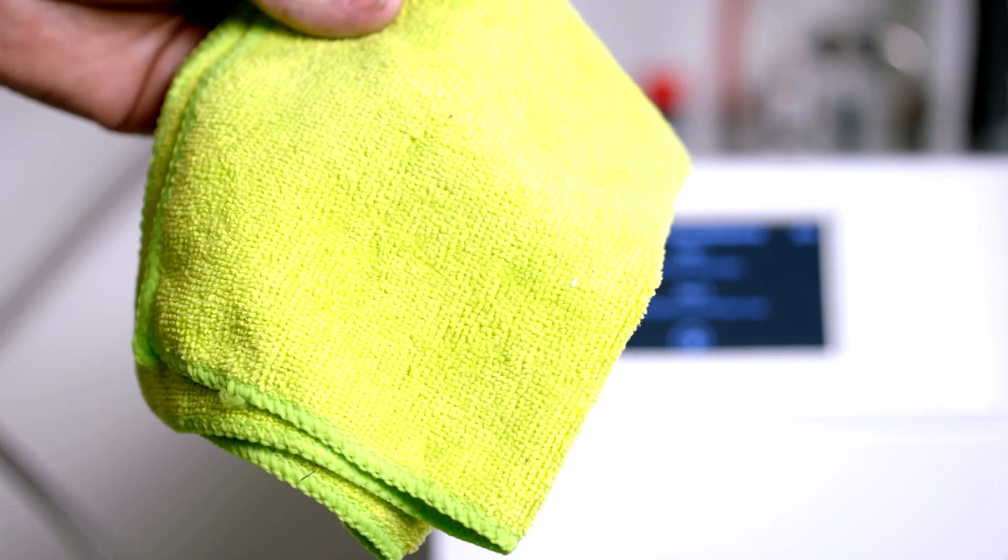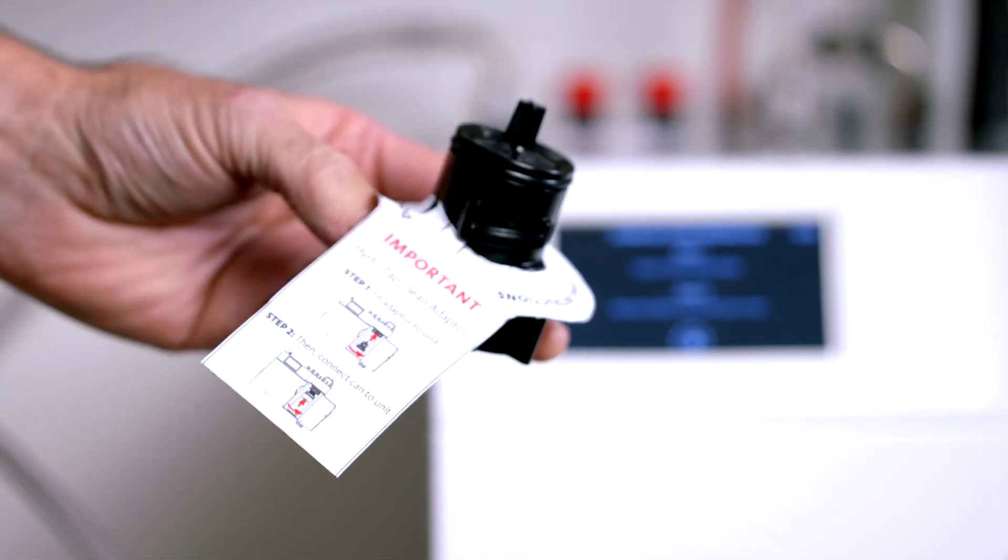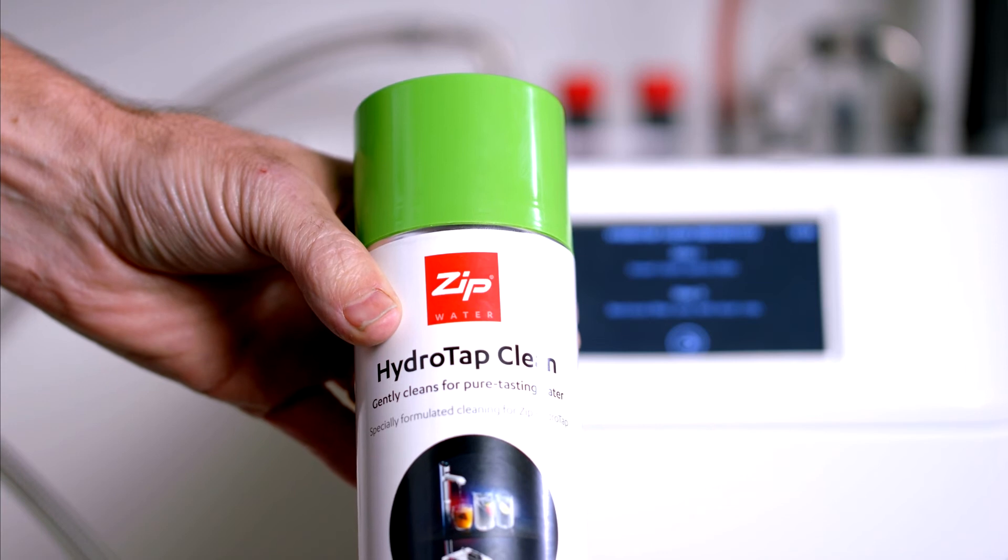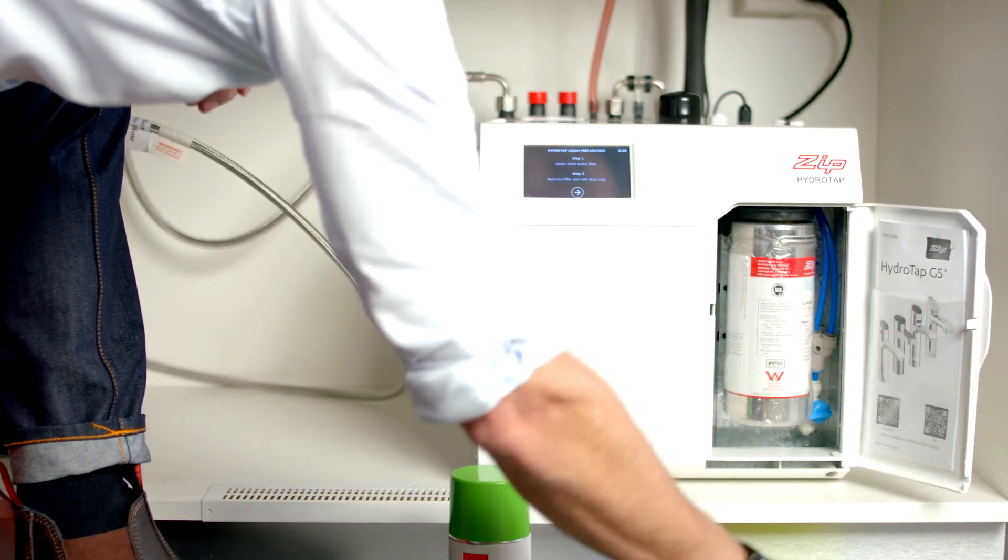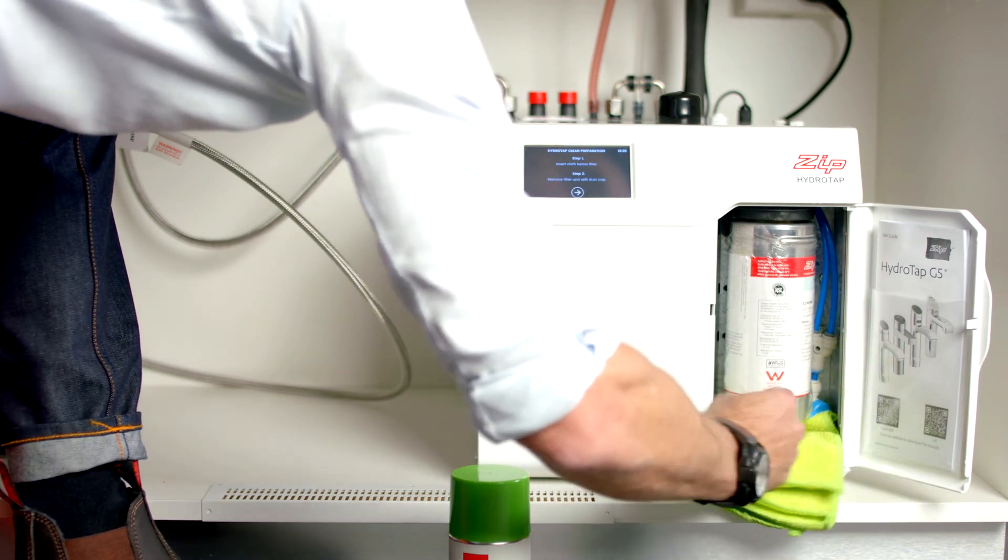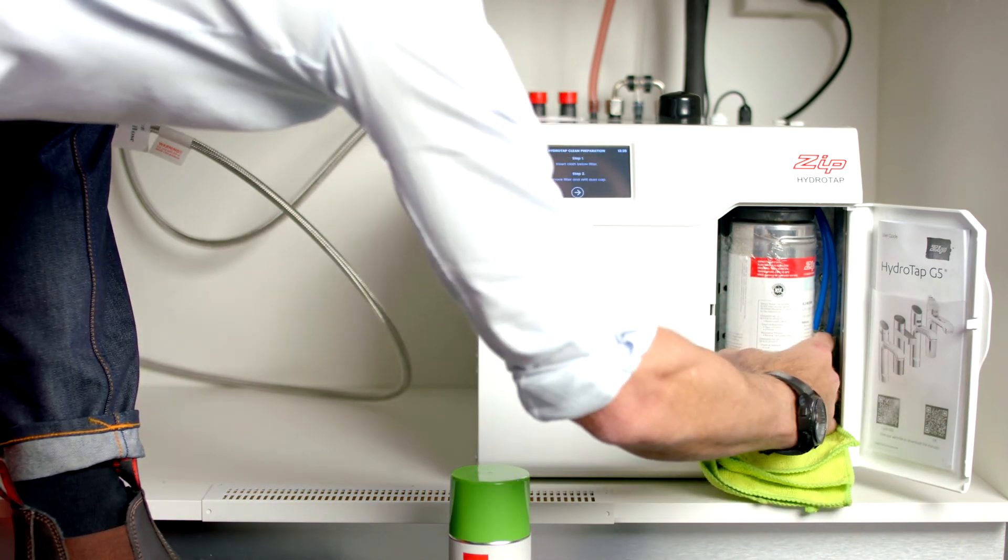Once complete, we need to prepare for the HydraTap clean process. You'll need a microfiber cloth, HydraTap clean adapter and a HydraTap clean can. Both the adapter and HydraTap clean can are supplied with the HydraTap command center. First, fit the cloth underneath the internal filter. This is to catch any water that may spill in the HydraTap when you remove the filter.